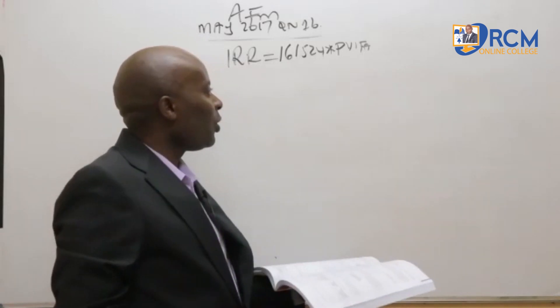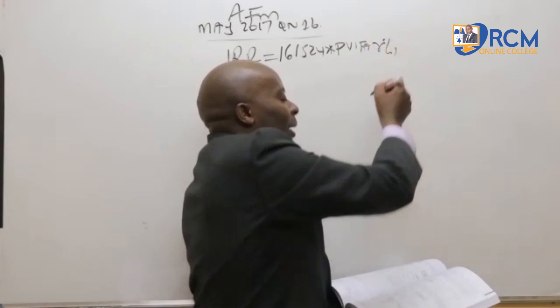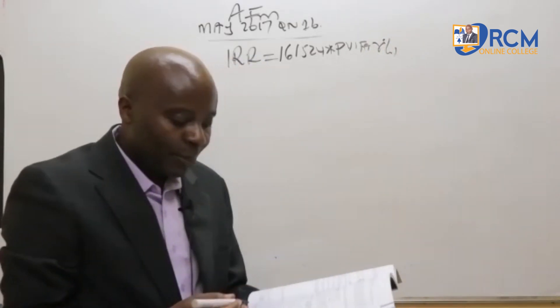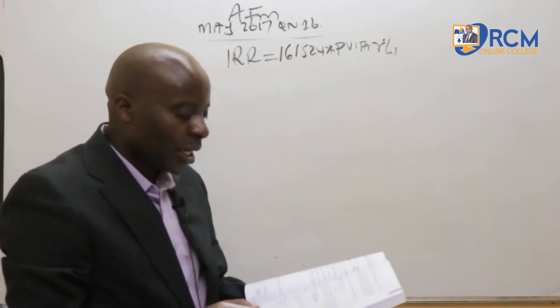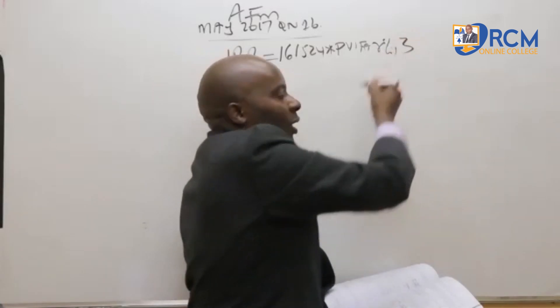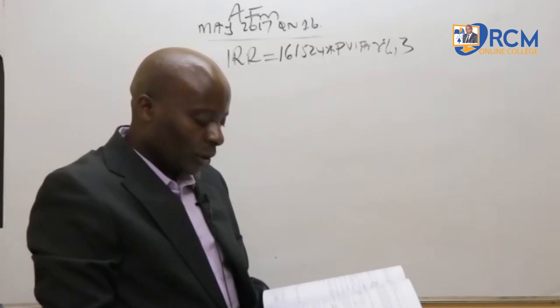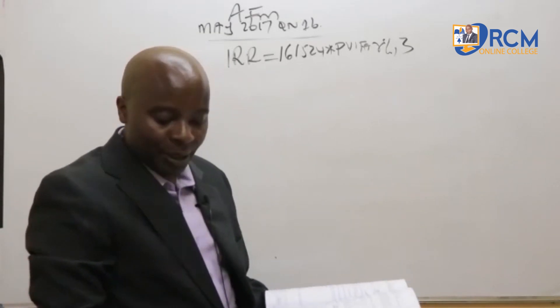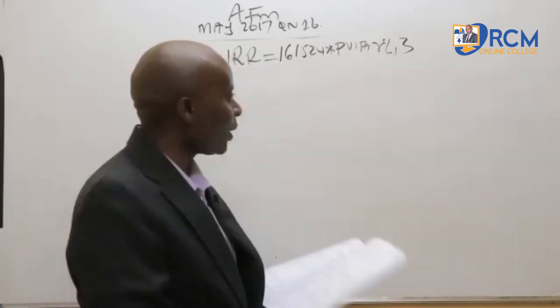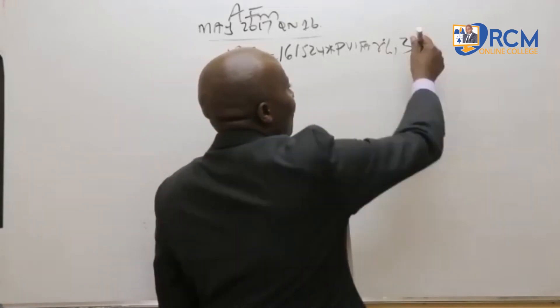So this present value interest factor of annuity, I don't know what the IRR is, but I know the number of years. I know the number of years of this particular project, there are three years. So gentlemen, minus the initial outlay. The initial outlay for project C I'm being told is 375,000.